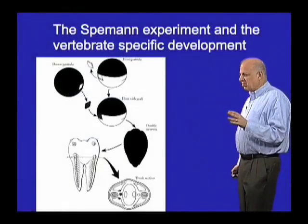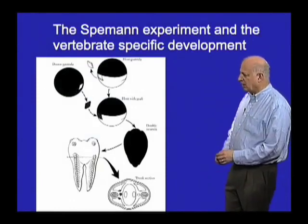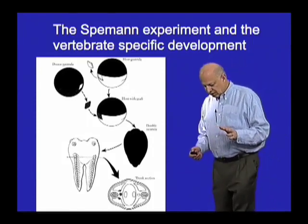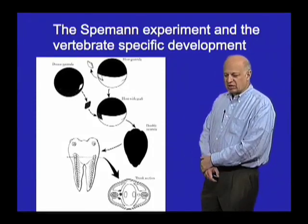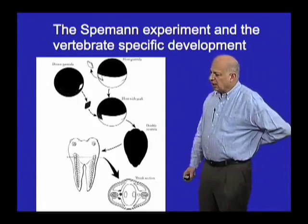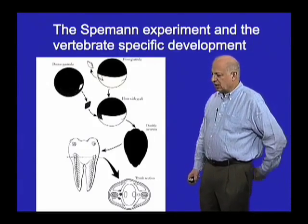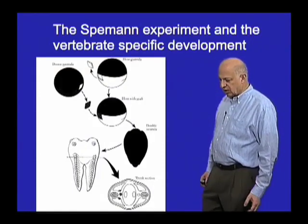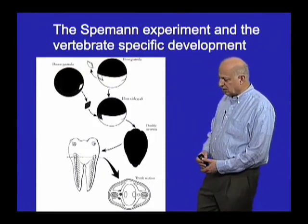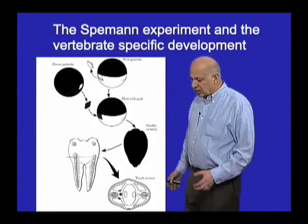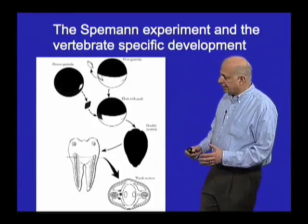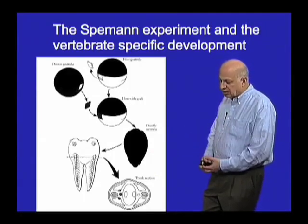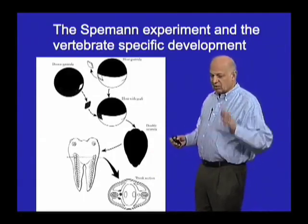Let's go back to the Spemann experiment and vertebrate-specific development. This experiment was done in the 1920s by Spemann and Mangold, and it was the most famous experiment in the history of developmental biology. The basic experiment was that they knew that one part of the egg or the early embryo would generate the belly, and one part of the early embryo would generate the back.